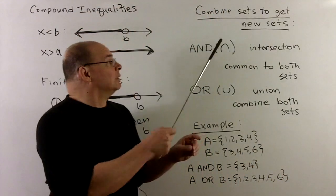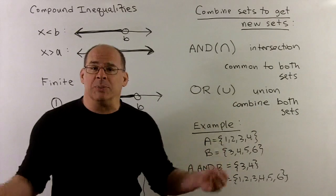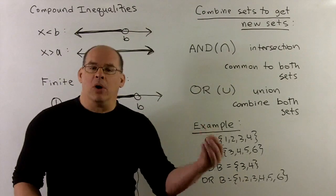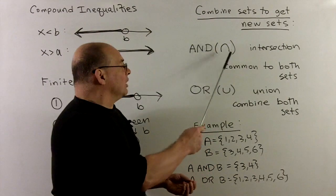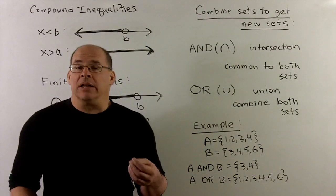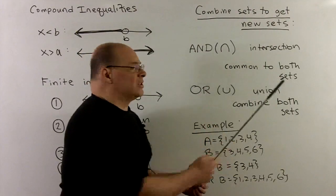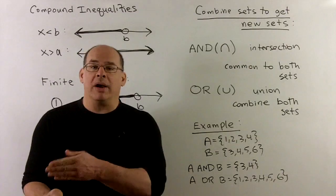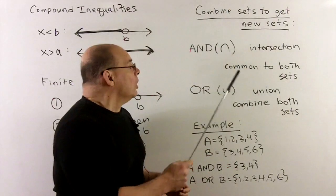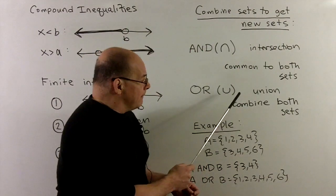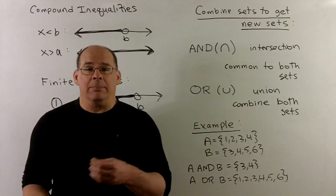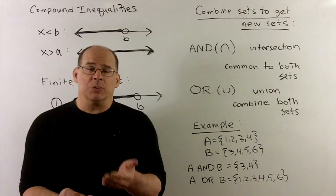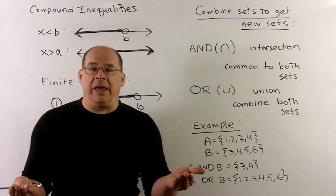Now the new operations. If we have sets, we want operations that let us build new sets. These come from AND and OR. AND — written as an upside-down u — is called the intersection. We keep only elements that are in exactly both sets; if you're in one but not the other, we throw you away. OR — written as a u — is called the union. We just combine both sets. If they overlap, we count those overlapping points once, but if you're in either set, you go into the union.